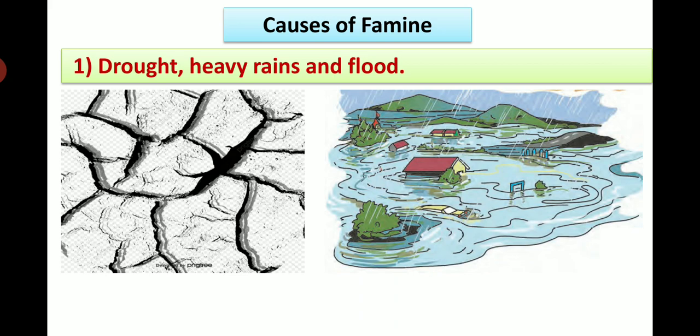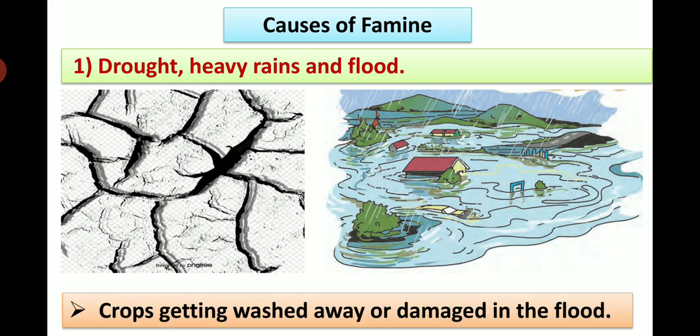Causes of famine: drought, heavy rains, and flood is one of the causes of famine. Crops getting washed away or damaged in the flood, and so the condition of famine arises.